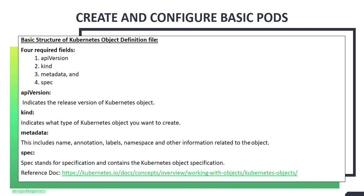In the spec section, you can define your desired state for the Kubernetes object defined in the kind field. The spec includes details of containers, the image used to instantiate a container, volumes, on what node the Kubernetes object is going to run, the restart policy of the Kubernetes object, and other related information.